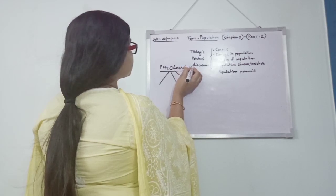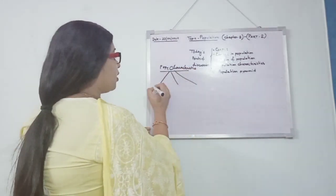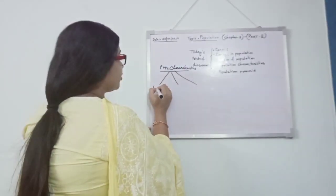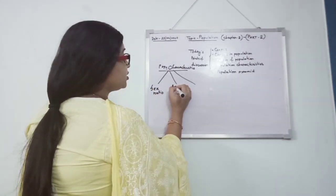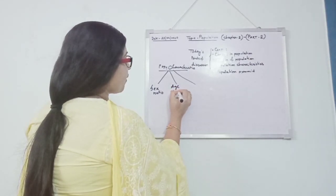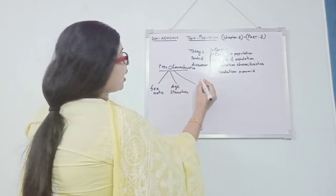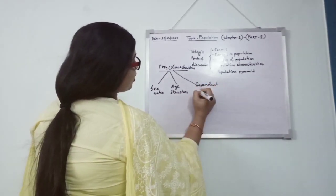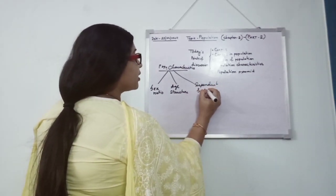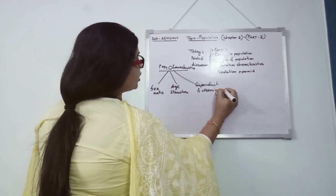We also can get to know about sex ratio, then age structure, and then dependent and working population.